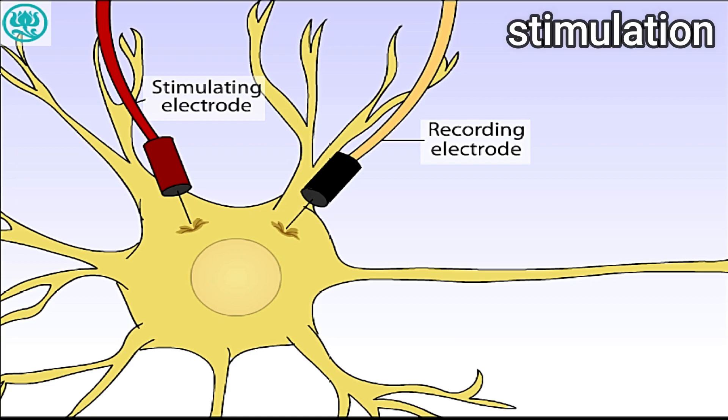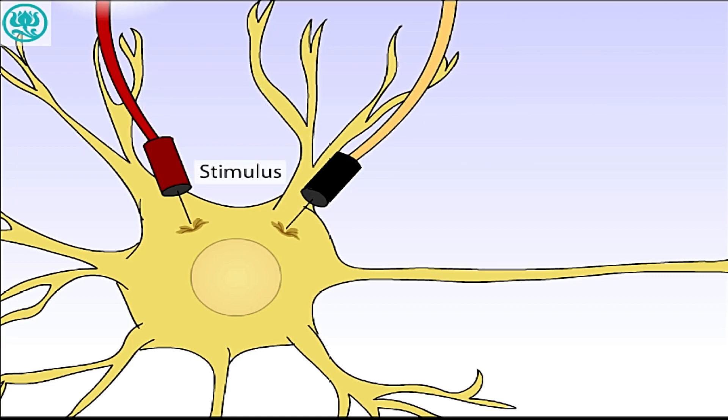Let's look at what happens when our model neuron is stimulated. The first two stimuli shown here are insufficient to depolarize the membrane past the threshold level. Thus, no action potential is generated and the voltage quickly returns to the resting level.